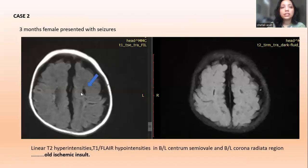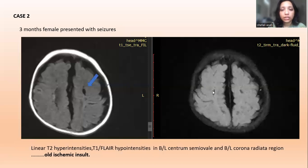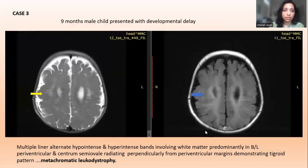Case 2: A three-month-old female child presented with seizures. On T1 and FLAIR sequences, there are T1 and FLAIR hypointensities noted in the bilateral centrum semiovale and bilateral corona radiata region, likely representing an ischemic insult.